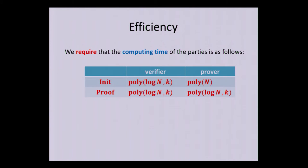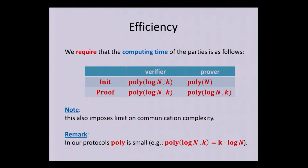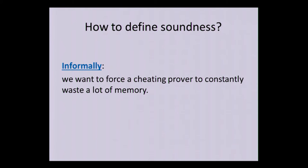The only problem with this solution is that this initialization phase requires to do a lot of work, in particular, it requires the server to send the whole string to the prover. Of course, he cannot send the seed, because then it would not be secure. So we require our efficiency requirements are like this, that basically everything should be very efficient, except of maybe the initialization phase for the prover. This imposes limits also on the communication complexity. By efficient, we mean polynomial in the logarithm of N and the security parameter. And only here, where obviously the prover needs to work at least linear time in N, because he needs to fill in his memory, right? So this is normal.